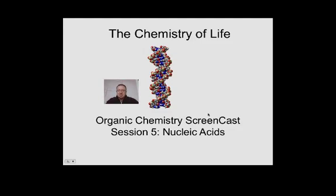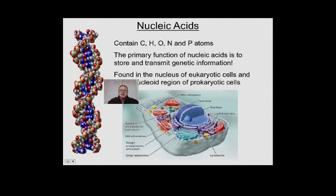So let's begin looking at the Chemistry of Life: nucleic acids. Our first main idea is nucleic acids. These are organic acids that are found to contain phosphate groups. We know that phosphate groups can act as acids, which is why these molecules are named nucleic acids. Also, they're named nucleic acids because they're found in the nucleus of eukaryotic cells.